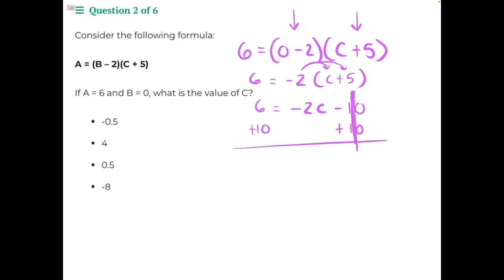These two 10s will cancel out. 6 plus 10 will give us 16 equals, bring down the rest of our numbers, negative 2C.